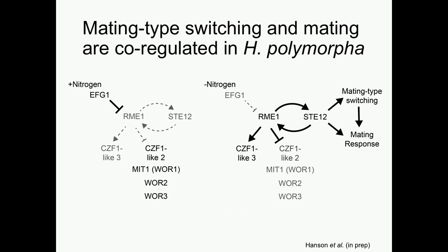To summarize what we've learned about the regulation of switching in Hansenula: mating-type switching and mating seem to be co-regulated by the same set of transcription factors. It appears to be an intersection between the canonical mating pathway and a differentiation pathway — particularly the white-opaque switching pathway in Candida albicans — where EFG1 acts as a regulator of RME1, which we hypothesize is the crux of the interaction between the differentiation and mating pathways.